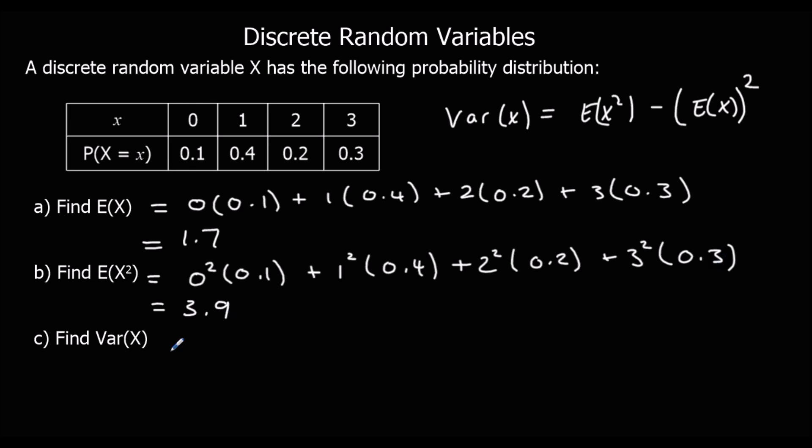Which means Var(X) is our E(X squared), 3.9, minus our E(X) squared, 1.7 squared. And that is 1.01.